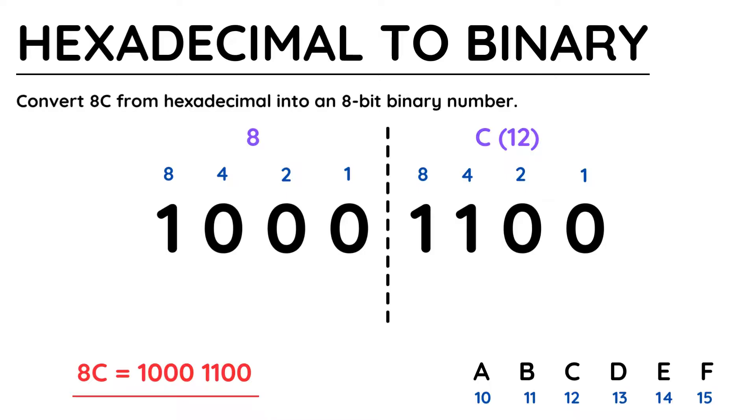And that's it, 8C in hexadecimal is equal to 1 0 0 0 1 1 0 0 in binary.